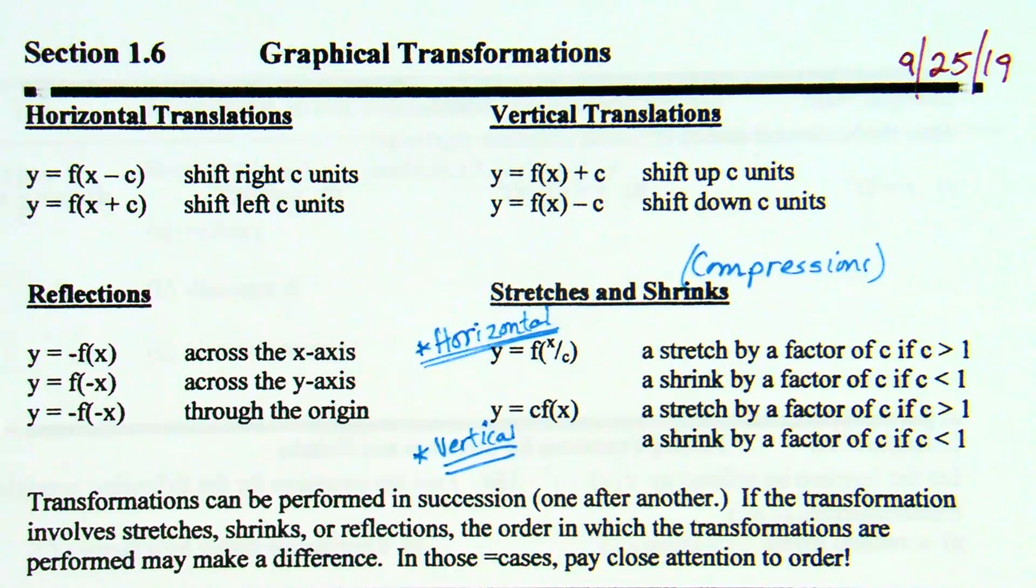Same thing the other way around. A horizontal shrink is going to make it skinnier. Well, what makes it skinnier also? A vertical stretch. So you'll see on some of these when we start talking about the horizontals, there's multiple different answers. Sometimes a vertical stretch is also equivalent to a horizontal shrink.